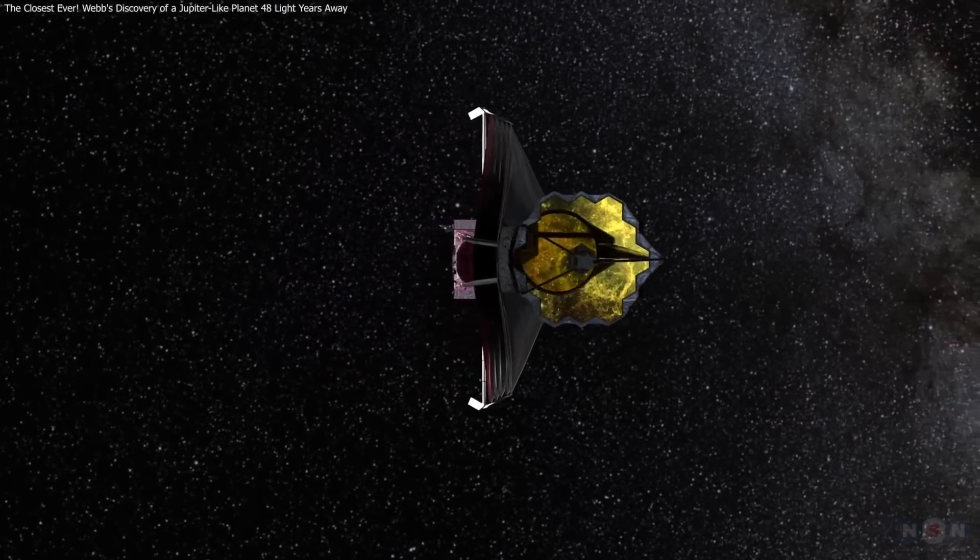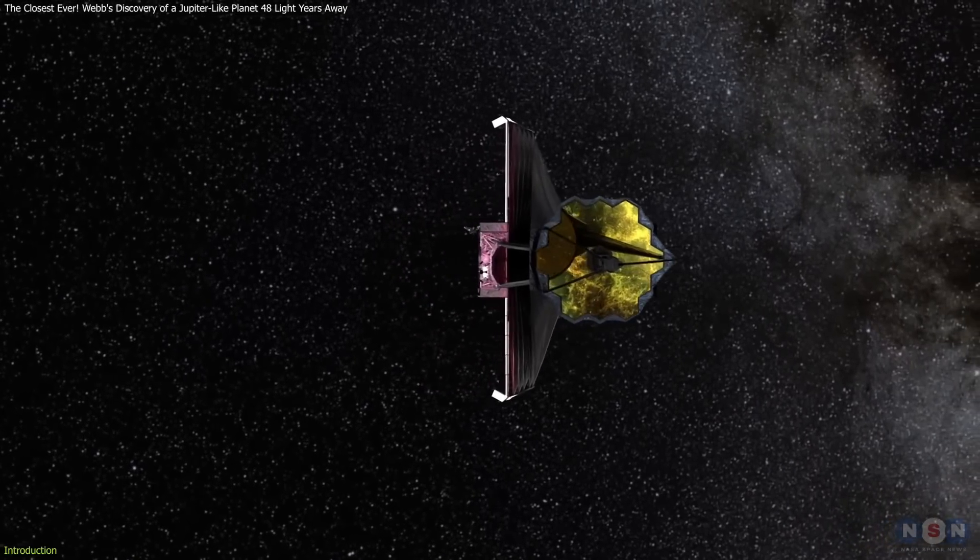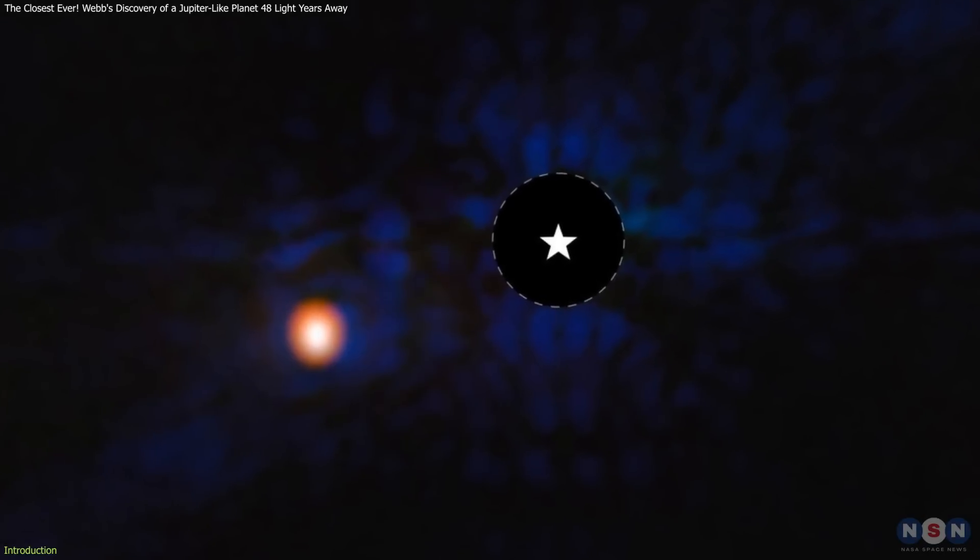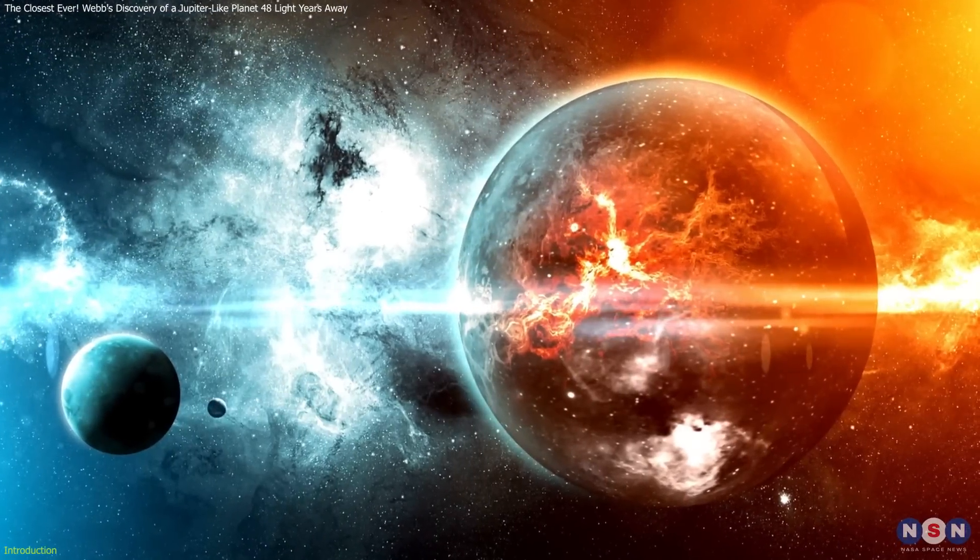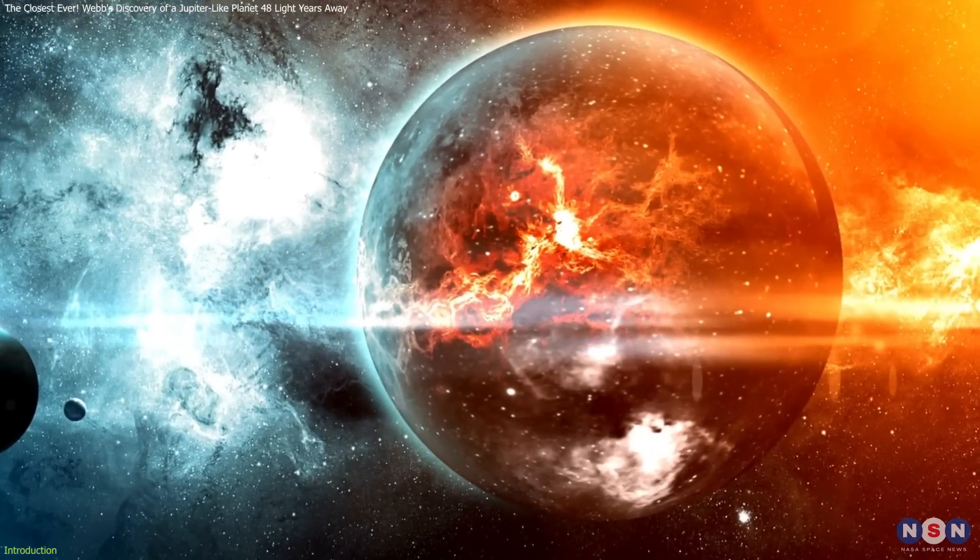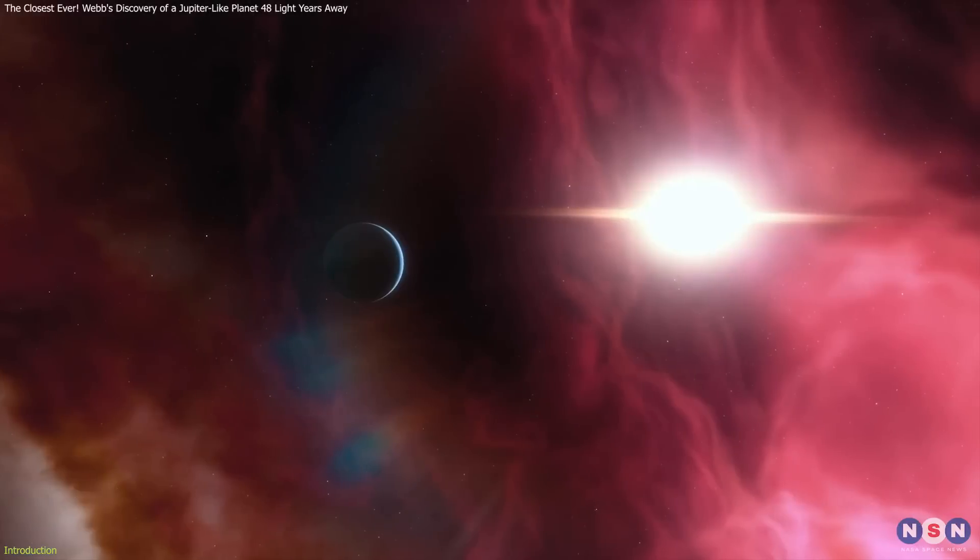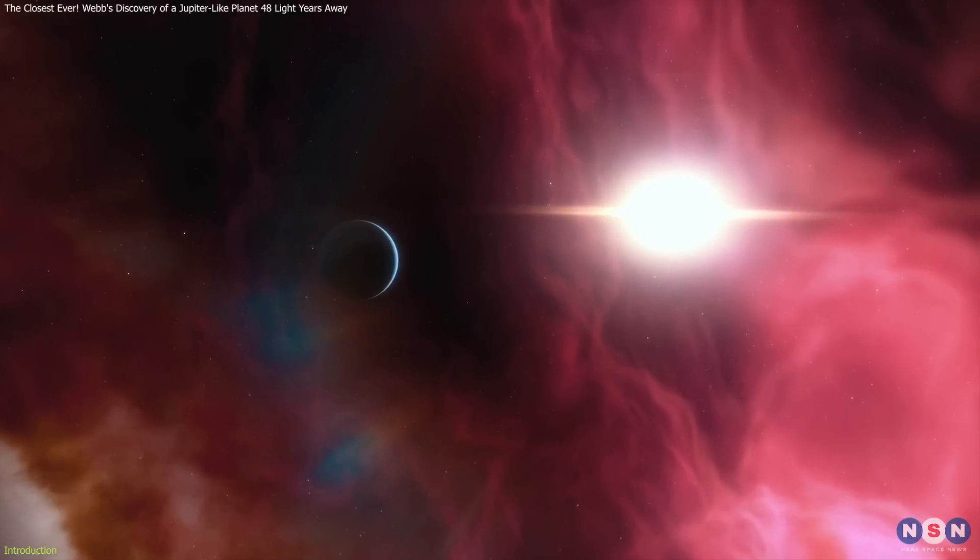The James Webb Space Telescope strikes again with another groundbreaking discovery, a cold super-Jupiter named Epsilon Indi Ab. This discovery is pivotal as it opens new windows into how gas giants form and evolve, providing insights that could reshape our cosmic perspectives.